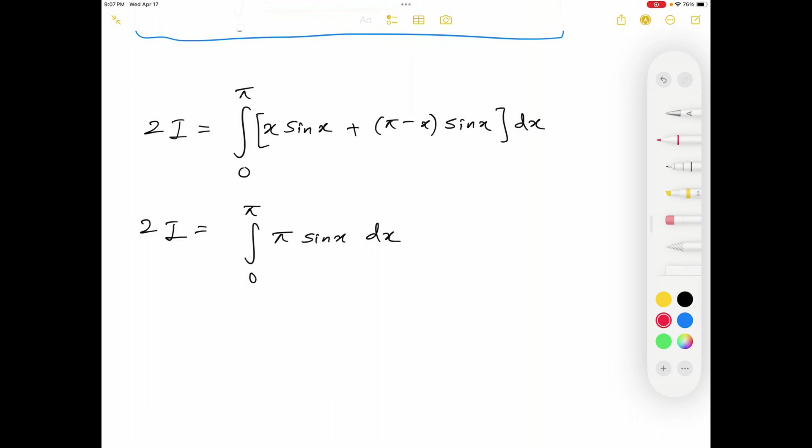Of course I can write down this π outside of the integral because π is a constant. Let me do that. 2I equals π integral 0 to π sin x dx.